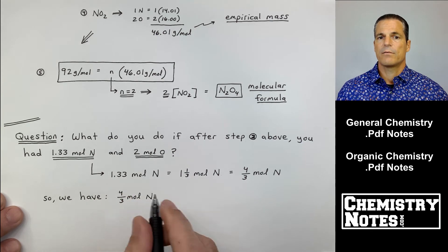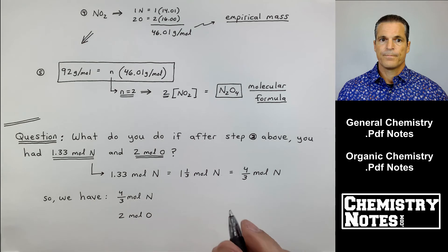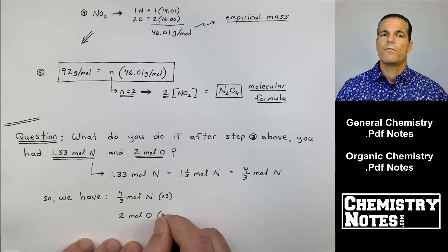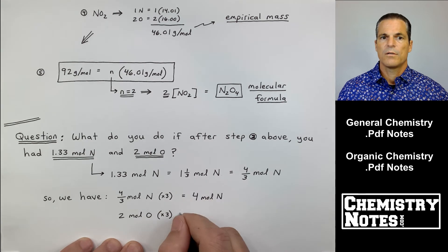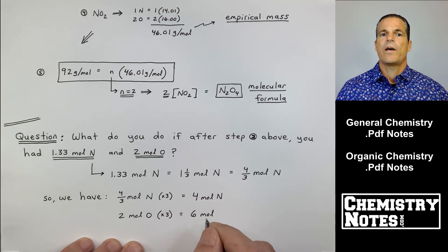which is equal to the improper fraction four-thirds mole. We have four over three moles of N, and then we still have laying around our two moles of O. I need to get those clean, so I have to multiply